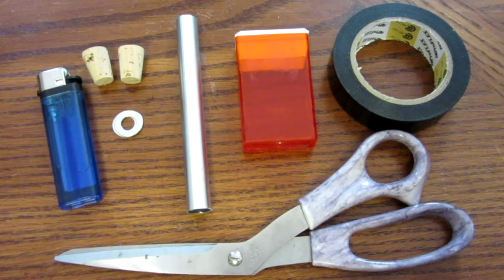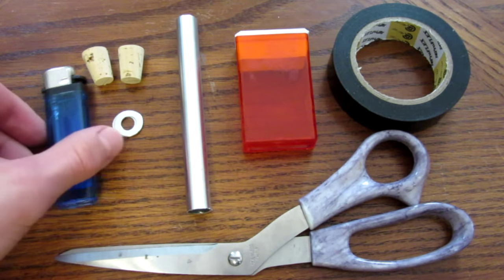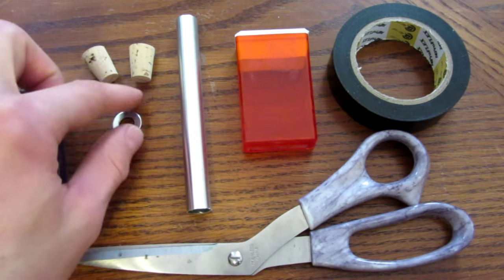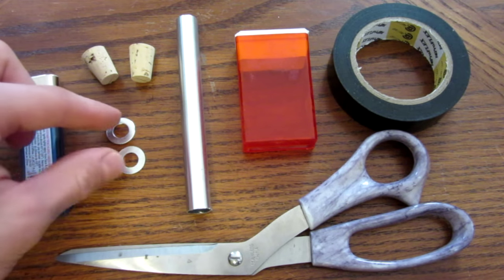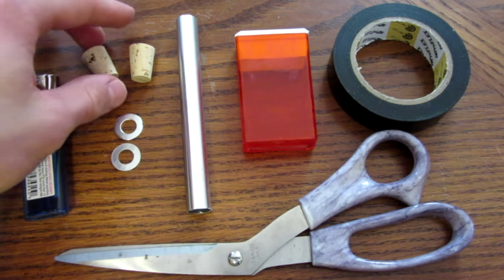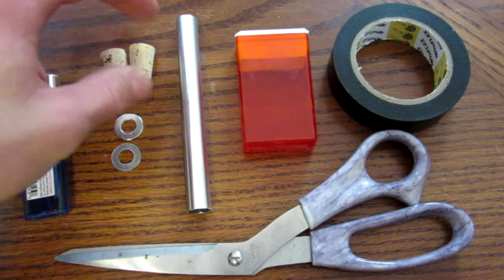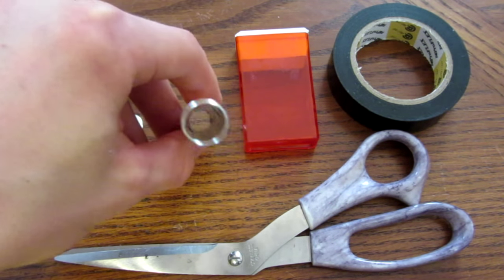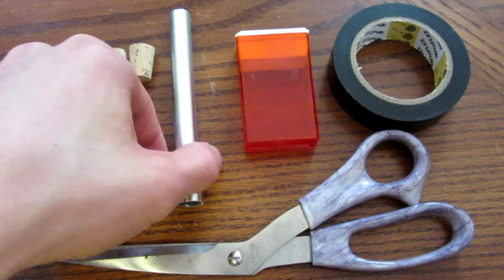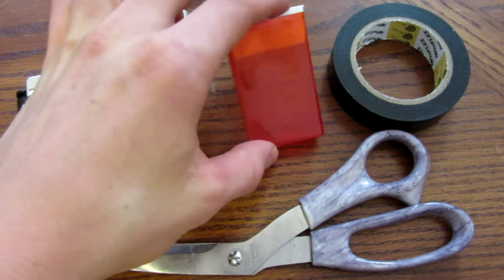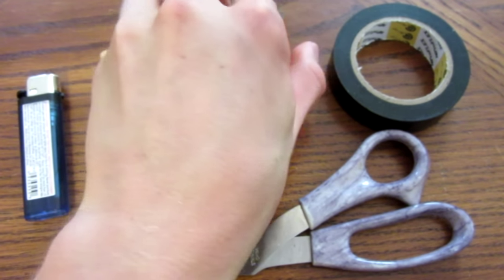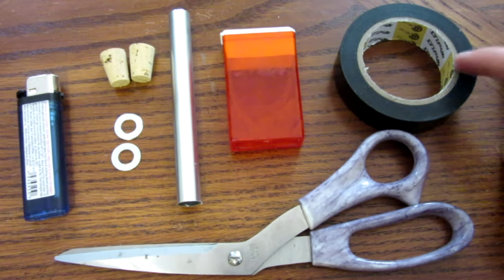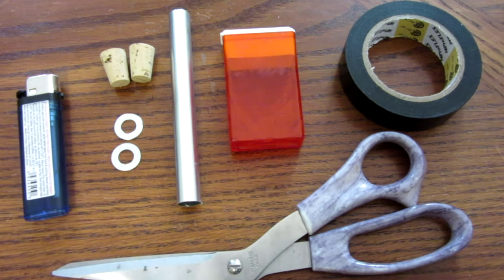For this simple project, all you will need is a lighter, optional two washers (recommended though), two corks that fit snugly inside of a barrel (must be metal, I have a little aluminum one here, about a half inch), a candy container or a little box, some tape, scissors, and a hot glue gun.